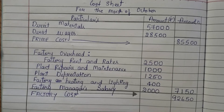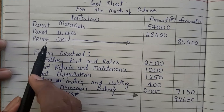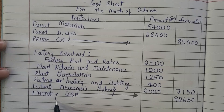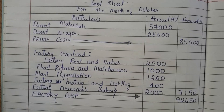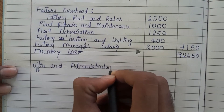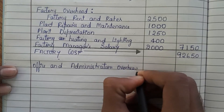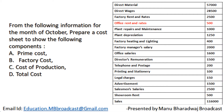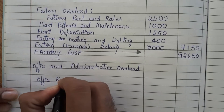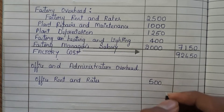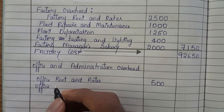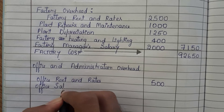Next we need to find out the cost of production. In order to find the cost of production, we need to add office and administrative overhead. Now see the question. First, we have office rent and rates — how much is office rent and rates? It is 500. Next, office salaries — in the office, some staff will be working like accountant, front office executive, cashier, and so on.